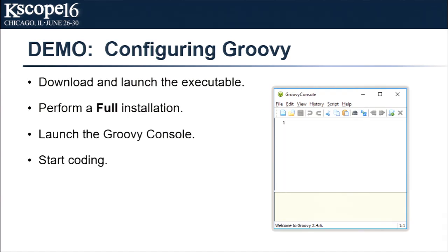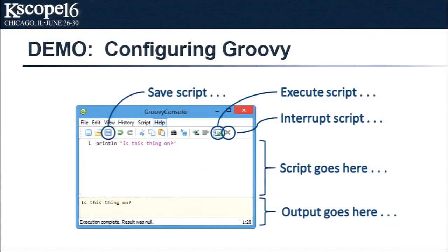We are going to be using Groovy today. If you haven't ever used Groovy, there's a link to download it. The Windows installer is on the right — click, download, and perform a standard next-next-next installation. Once Groovy is installed, we can start coding — all we need is access to the internet. In the Groovy console: there's a button to save the script, a button to execute it, and you can interrupt a running script. The big white section is where you put your code, and the output section at the bottom is useful for print-line debugging.